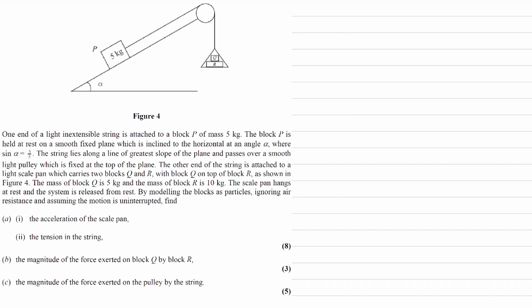One end of a light inextensible string is attached to a block P of mass 5 kilograms. The block P is held at rest on a smooth fixed plane, so no friction, which is inclined to the horizontal at an angle alpha, where sin alpha is equal to 3 over 5.